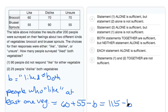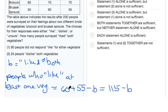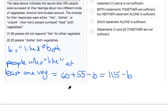So if we can determine how many people like at least one of the vegetables, we can find B and answer the question. Let's go ahead and take a look at statement one.